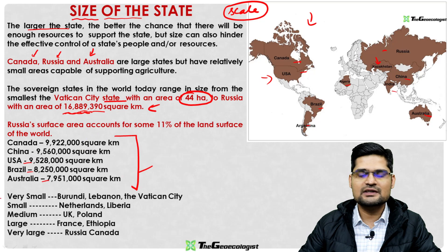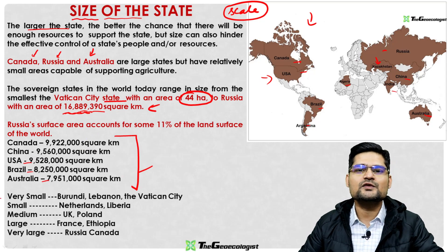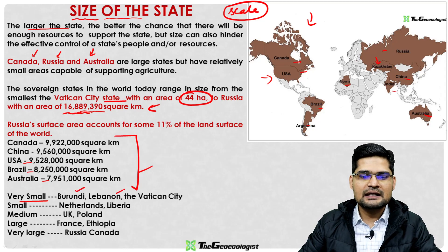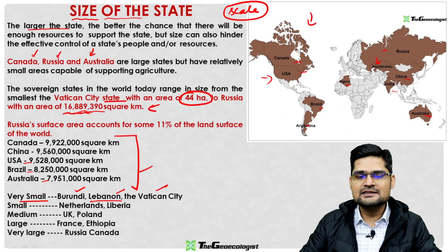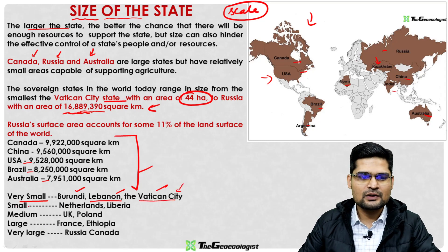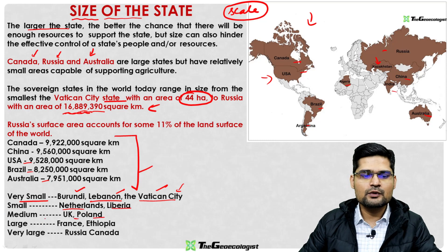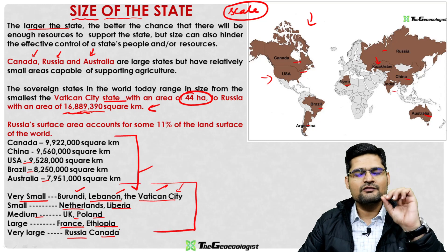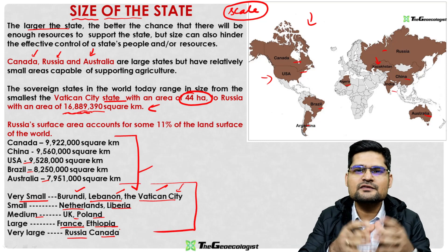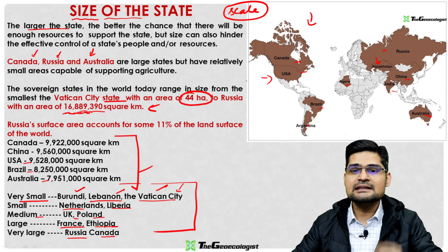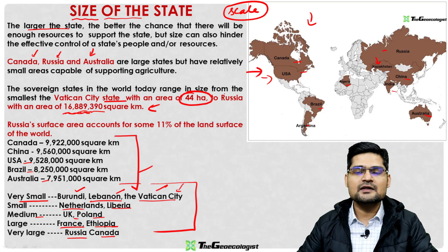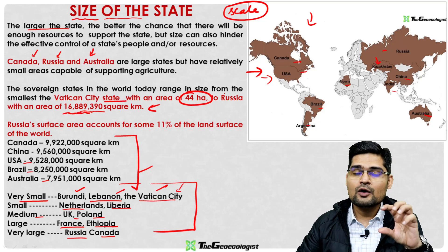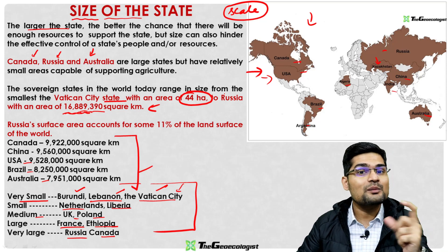Canada, China, USA, Brazil, and Australia are the largest countries by area. Smaller countries include Burundi, Lebanon, and Vatican City. There are medium-large countries like France and Ethiopia, and very large ones like Russia and Canada. These sizes represent the world map and sometimes indicate dominating or dominated states.